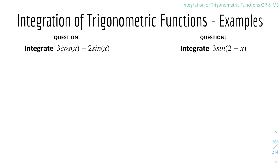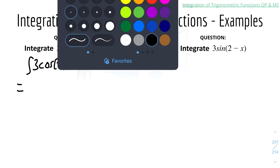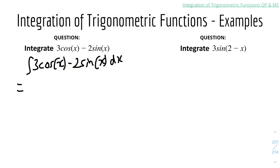Now moving to some examples for integration of trig functions. Number one: integrate 3cos x minus 2sin x dx. For the first term, the integral of cos x is just sin x — there's no coefficient adjustment — so it gives 3sin x. To check your answer, differentiate 3sin x and you get 3cos x, which is what we started with.